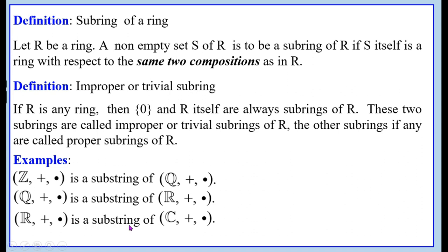The algebraic structure (R, +, ·) is a sub-ring of the algebraic structure (C, +, ·), where + and · are ordinary addition and ordinary multiplication of numbers. From this we can say that the set of integers is a sub-ring of the set of real numbers, and also a sub-ring of the set of complex numbers. Similarly, the set of rational numbers is a sub-ring of the set of complex numbers with respect to addition and multiplication.